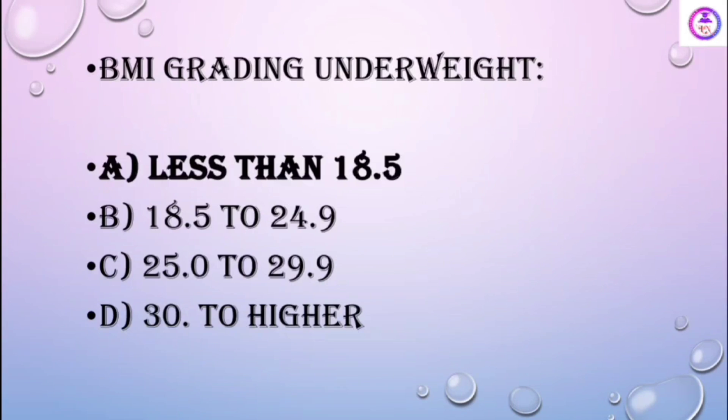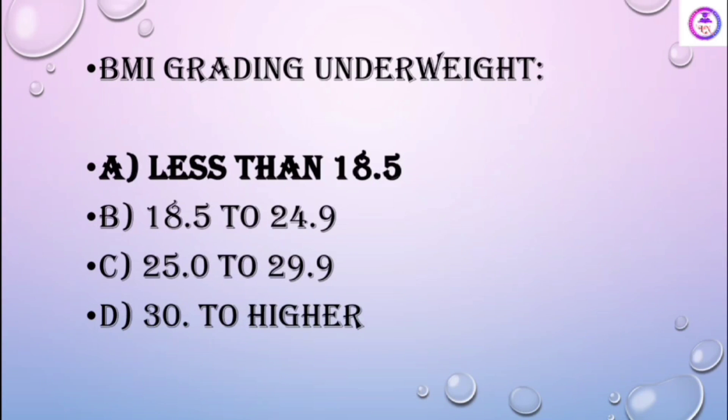BMI grading: underweight is defined as less than 18.5 kg/m² in BMI grading.